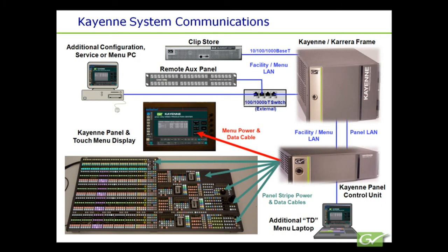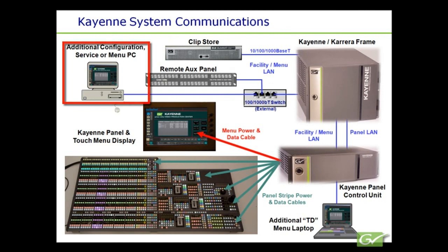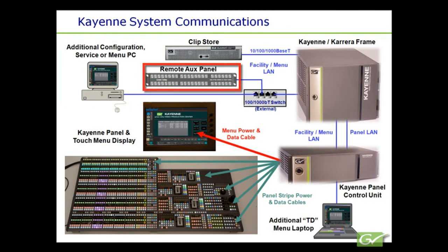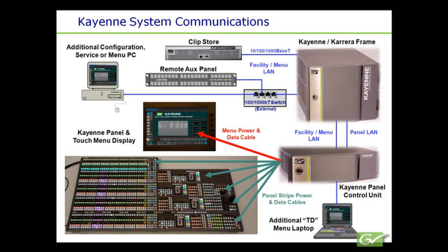Additional connections to the frame include the optional clip store and any additional menu or configuration PCs and any remote aux panels. Additional gigabit Ethernet switches can be added to the system as required to expand the number of external connections. The clip store and the two panel LAN connections must be direct connections to the frame. If these frame connections need to be extended, contact Grass Valley customer support prior to installation.